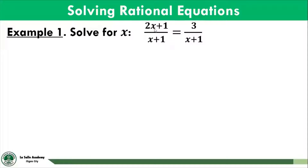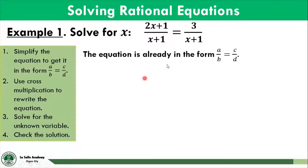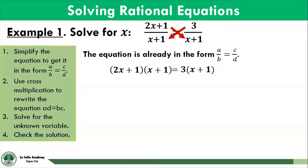Let's start with the first one. Solve for x in the given rational equation: 2x plus 1 over x plus 1 is equal to 3 over x plus 1. The equation is already in the form a over b is equal to c over d, where a is 2x plus 1, b is x plus 1, c is 3, and d is x plus 1. Using cross-multiplication, our new equation is the quantity 2x plus 1 times the quantity x plus 1, equal to 3 times the quantity x plus 1.